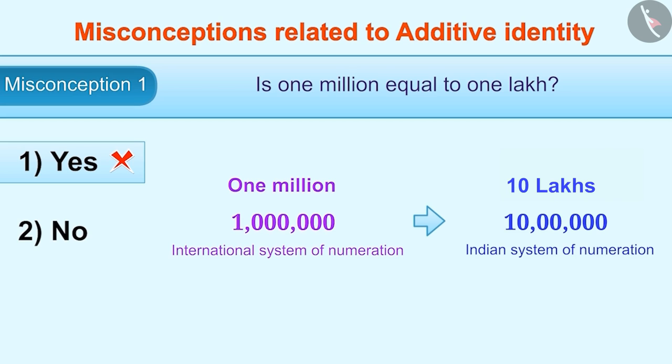That means, 1 million is equal to 10 lakh. It is not equal to 1 lakh.